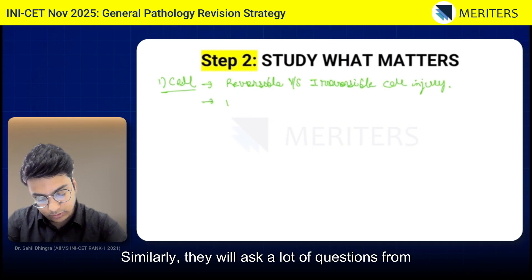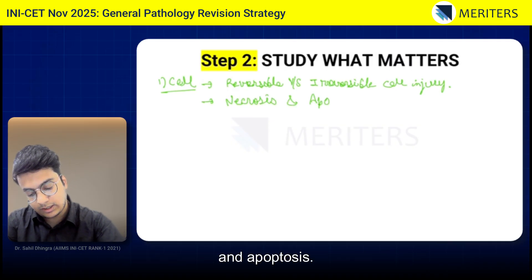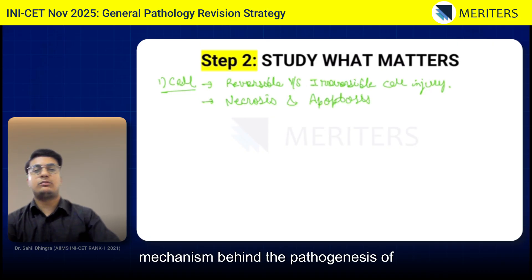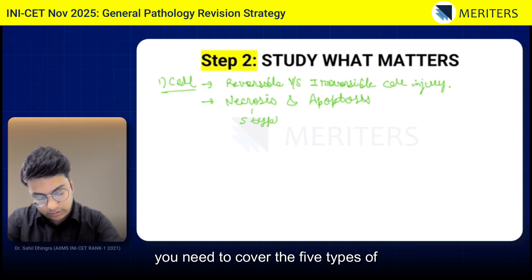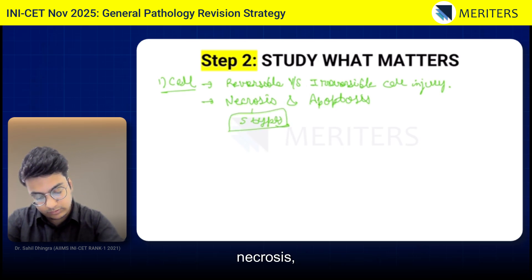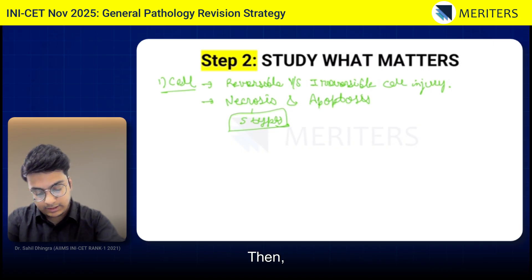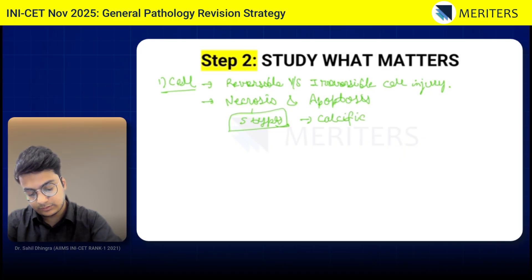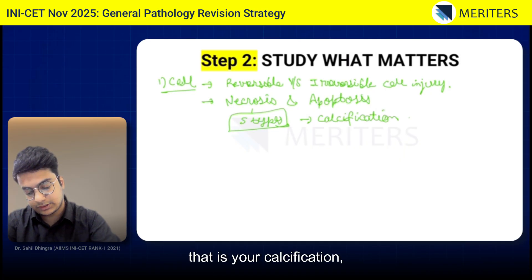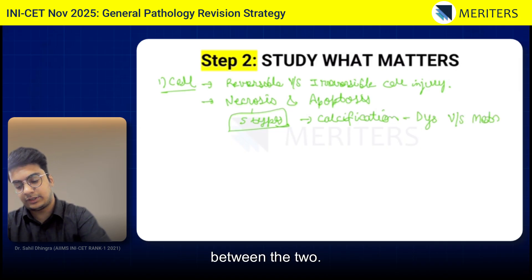They will also ask a lot of questions from necrosis and apoptosis. In apoptosis, you need to know the mechanism behind its pathogenesis. In necrosis, you need to cover the five types: coagulative, liquefactive, caseous, etc. Other than this, there is one more important aspect in this chapter — calcification. Dystrophic and metastatic calcification: you need to know the difference between the two.